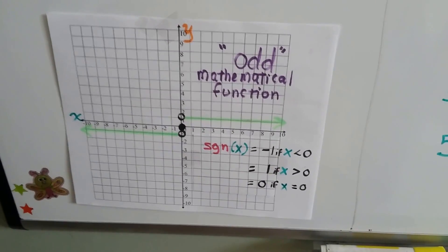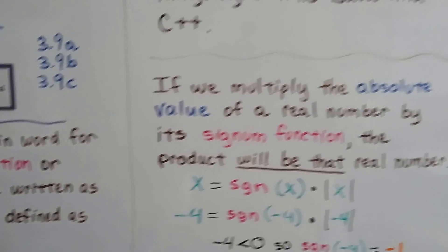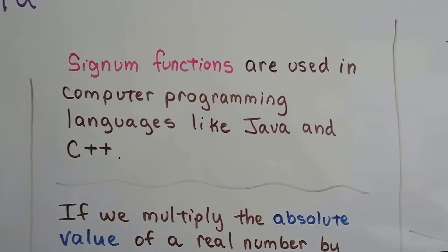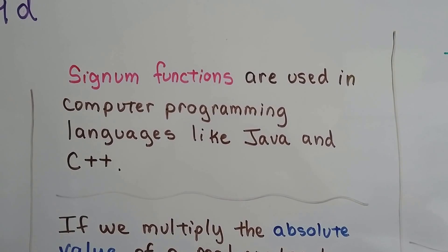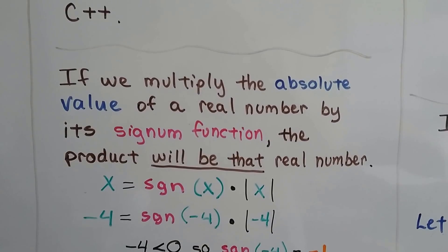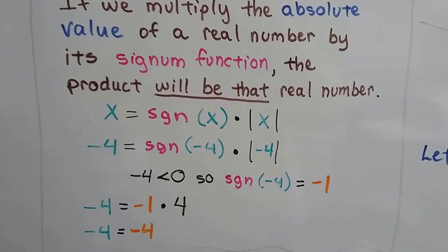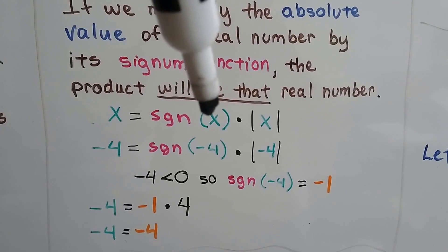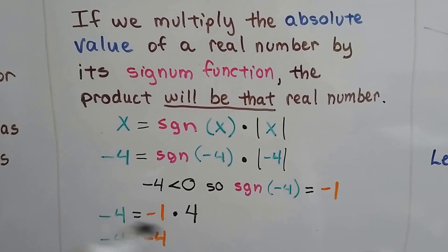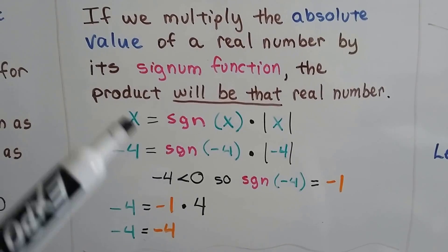Sign functions are called odd mathematical functions, and we'll talk about that later in this series. Sign functions are also used in computer programming languages like Java and C++, and you're going to see it in calculus too. If we multiply the absolute value of a real number by its signum function, the product will be that real number: x equals sgn(x) times the absolute value of x.